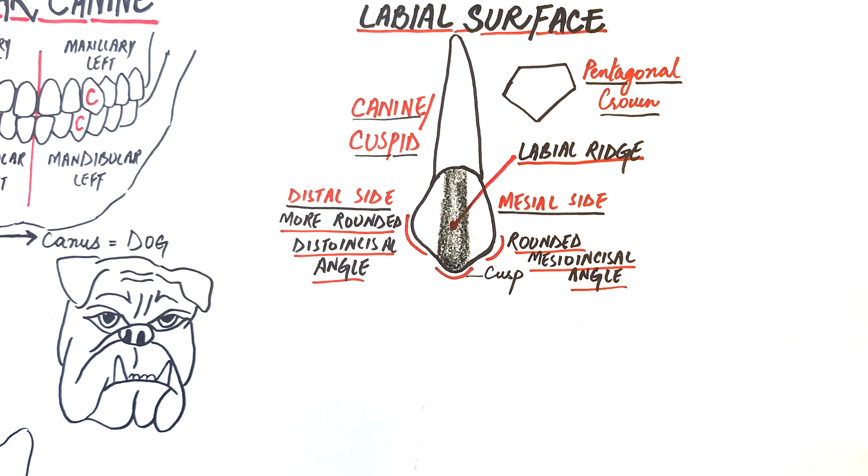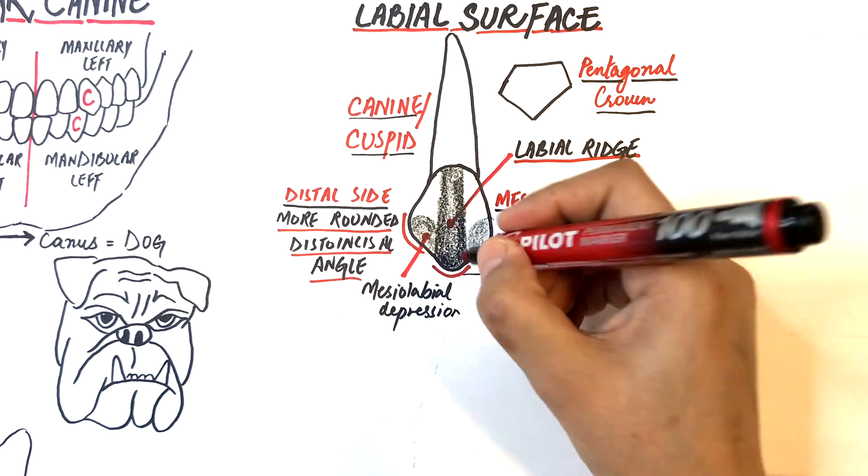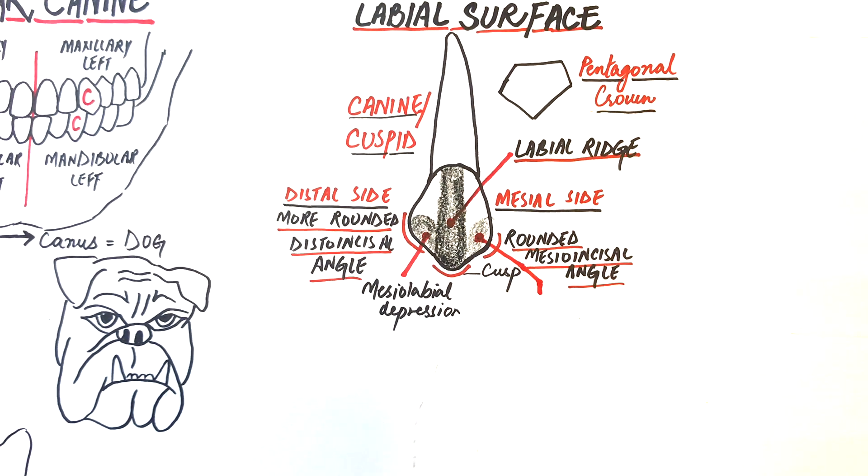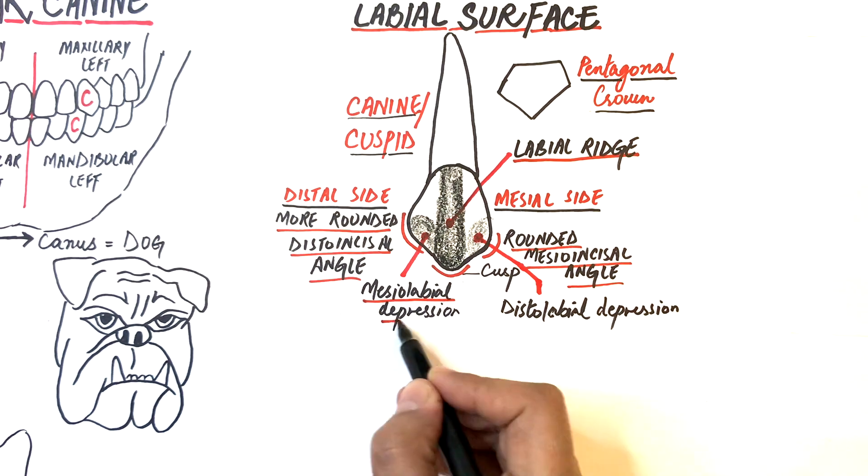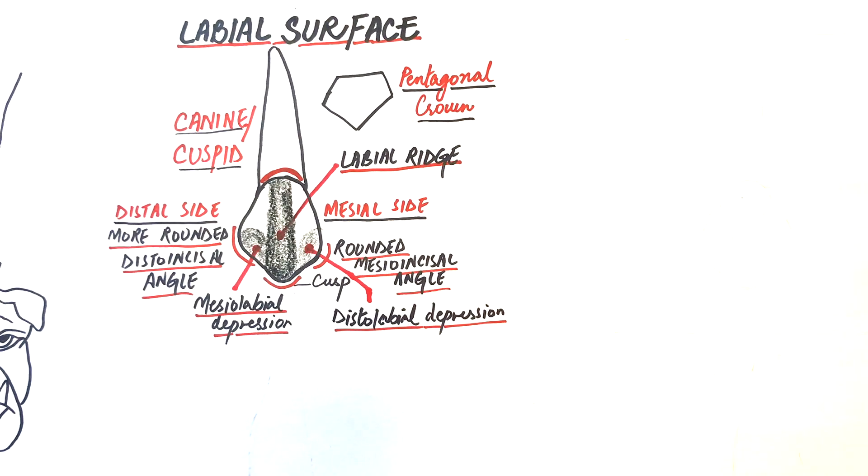Separating the three lobes and lying on either side of the labial ridge in the incisal portion of the crown are two faint concavities or depressions called the mesolabial and the distolabial developmental depressions. The cervical line is quite evenly curved towards the root.